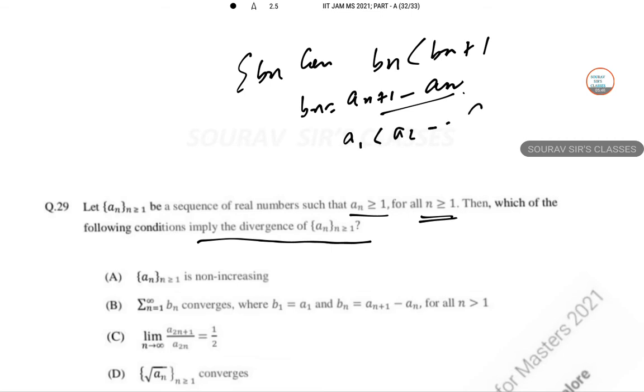You can see that a_1 less than a_2 less than a_n less than a_{n+1}. So the sequence is convergent. So a_n being convergent doesn't imply divergence.